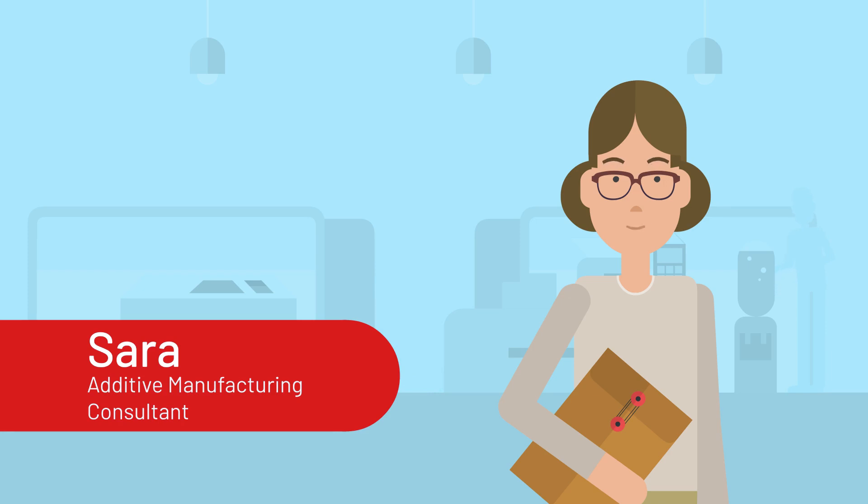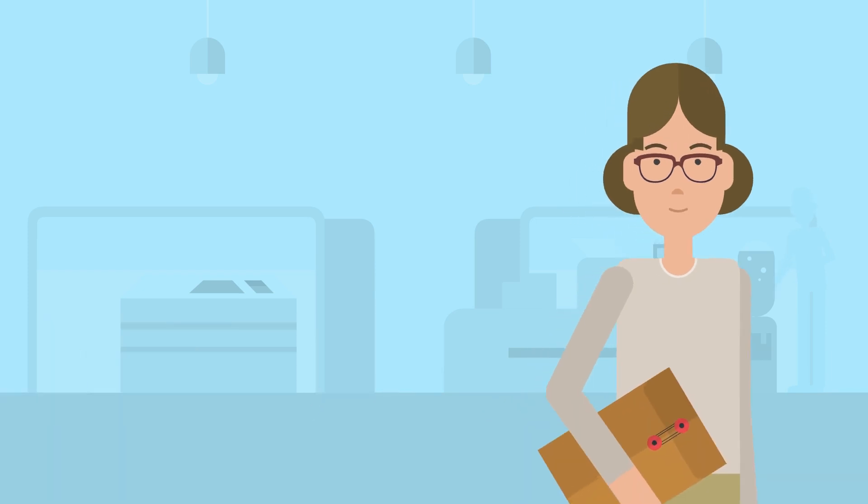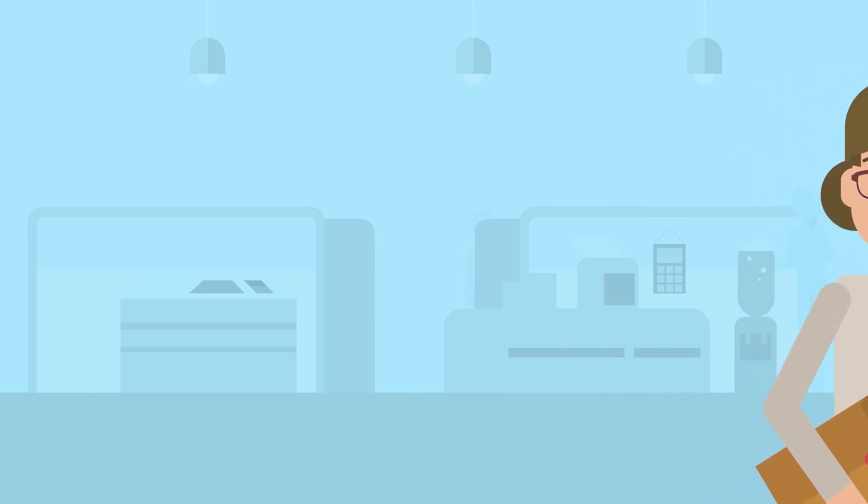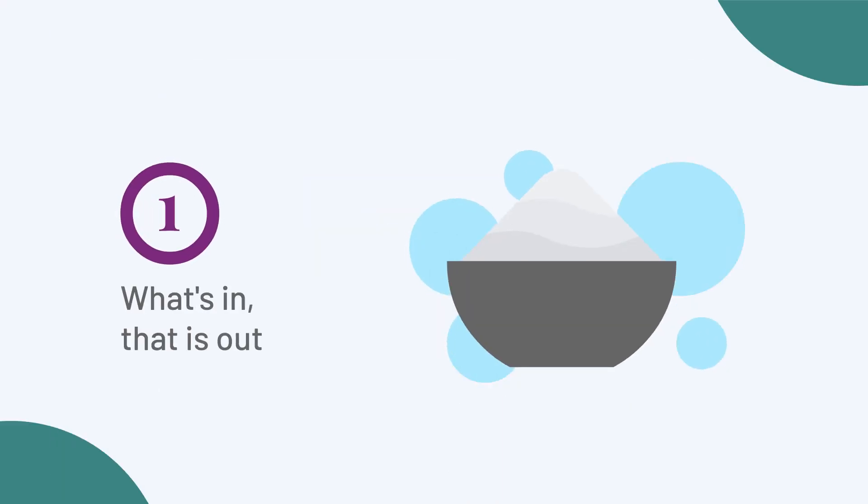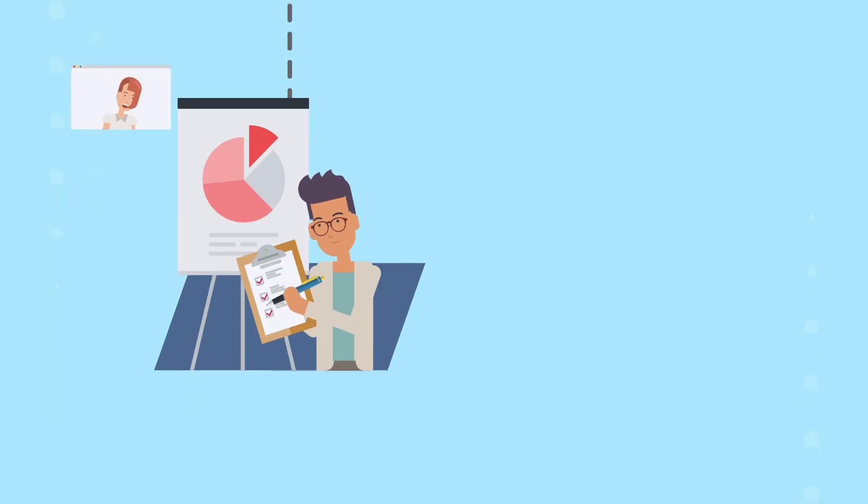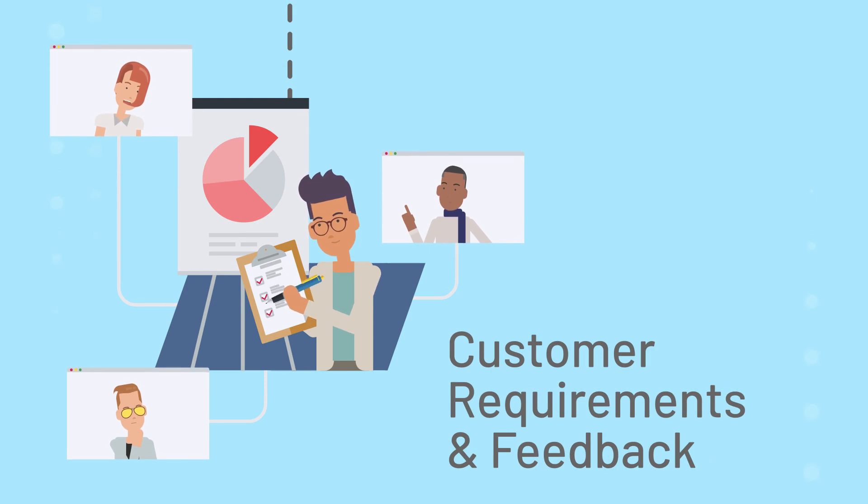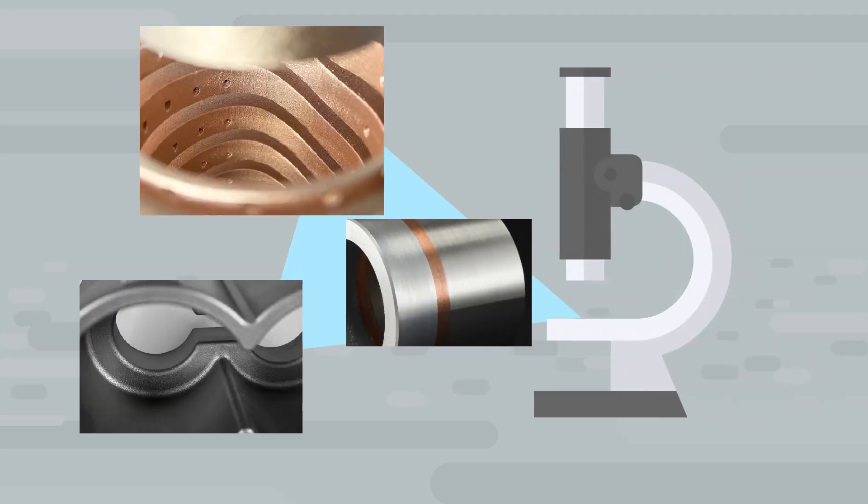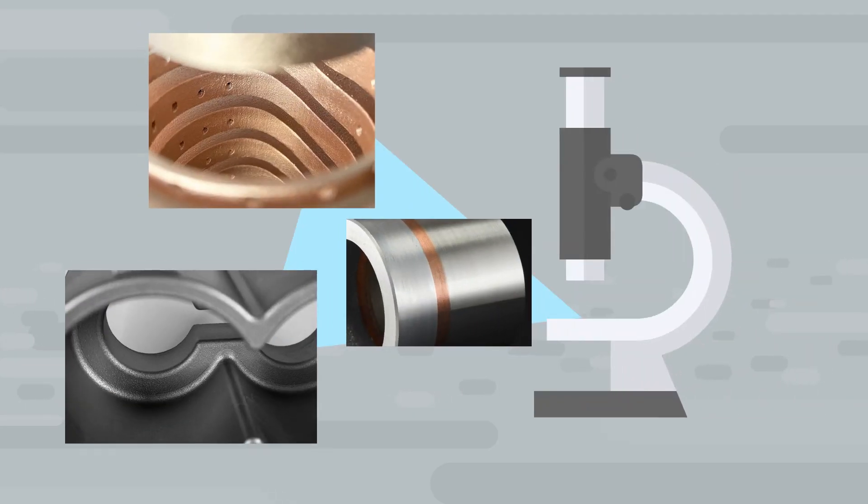Here we have summarized 10 guidelines for your future AM projects. Follow me. Number one: what's in, that is out. Assure good quality powder. Our team of materials and metallurgy experts continuously develop the DMLS materials based on customer requirements and feedback. Our R&D teams are working on a wide range of future materials such as bronze, pure copper, metallic glasses, and lightweight alloys, just to name a few.